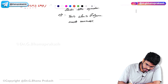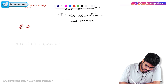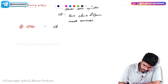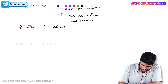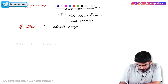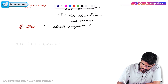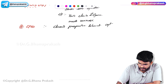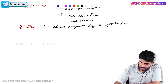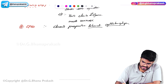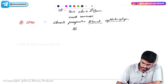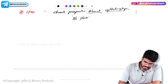The second disorder is CPEO — Chronic Progressive External Ophthalmoplegia. Patients present with weakness of the external eye muscles and bilateral ptosis.